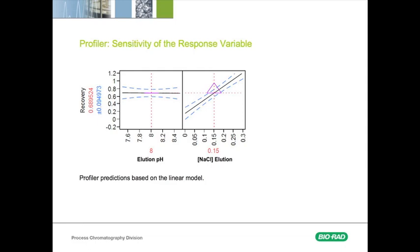The blue dashed line represents the 95% confidence interval, and the red dashed line represents the predicted recovery at the corresponding value of the elution pH and the elution sodium chloride. The purple triangle represents the sensitivity of the recovery on a given experimental factor.